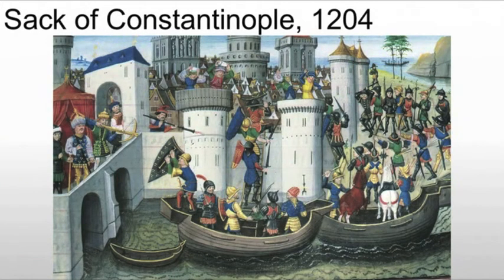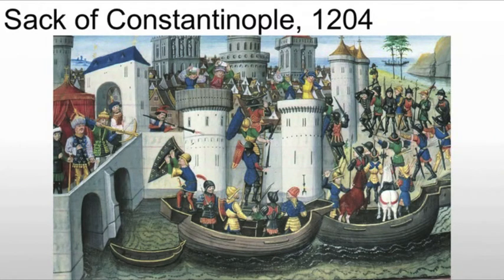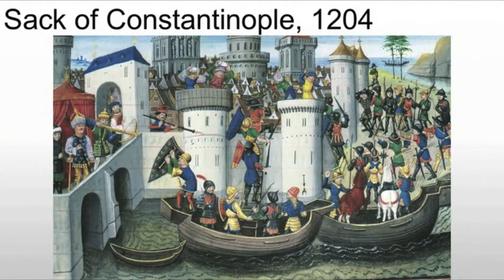We're also going to see the sack of Constantinople in 1204. Now, this is not the fall of Constantinople — that will happen in 1453 when the Ottomans conquer the Byzantine Empire for the last time. This is the Fourth Crusade. The crusaders show up in Venice on their way to the Holy Lands, and the Venetians bribe them to destroy Constantinople. In doing so, they destroy the economy of the Byzantine Empire, which had been the primary center of trade for Europe for centuries. This runs off all the artisans, who go elsewhere to seek money — and where do they go? Italy.